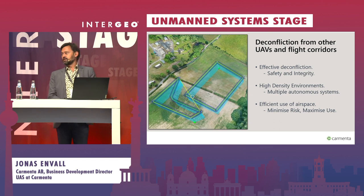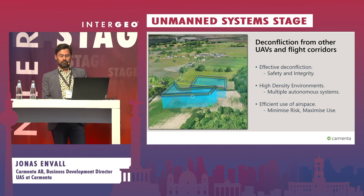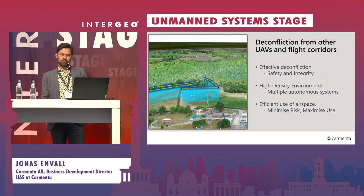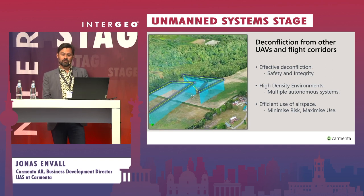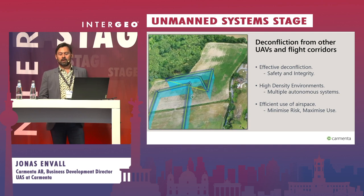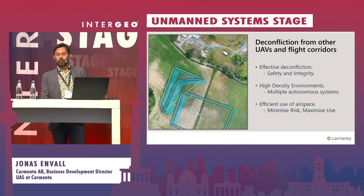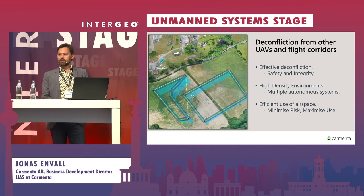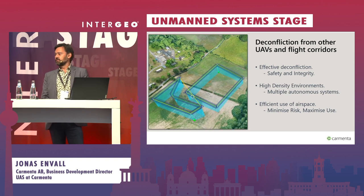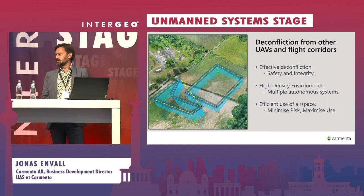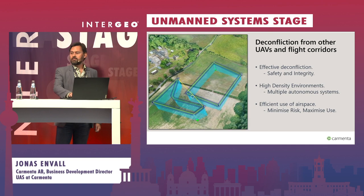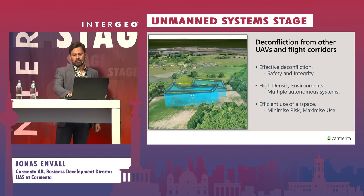Another important de-confliction is the separation between different routes in the four-dimensional plane. This video shows two routes that have been de-conflicted from each other. As multiple autonomous systems operate in the same airspace, the potential for in-flight collision and airspace congestion increases — so this is an important concept that we also work with.